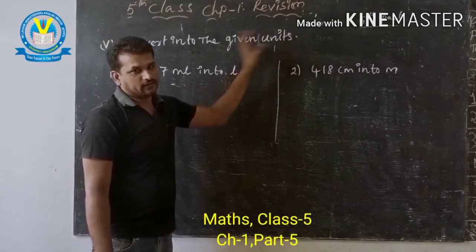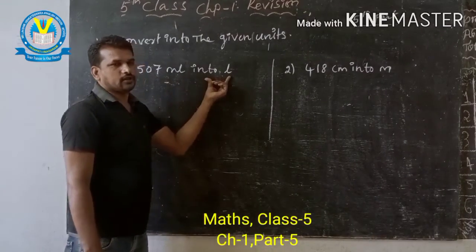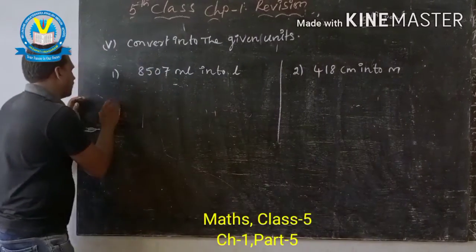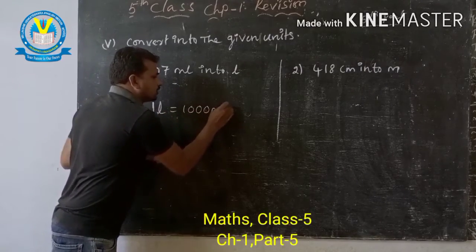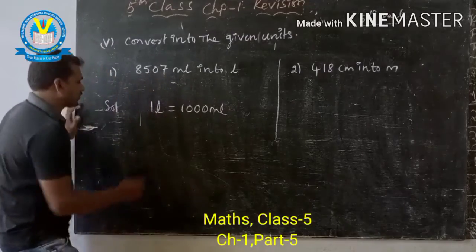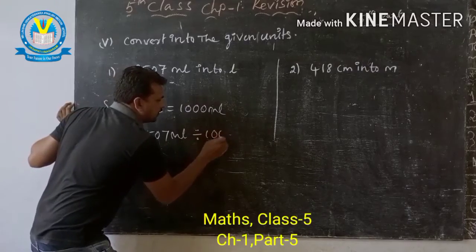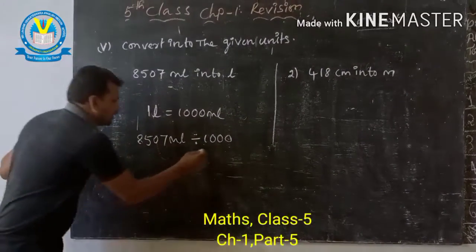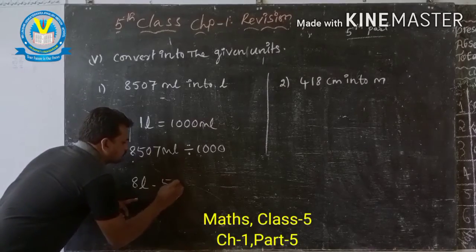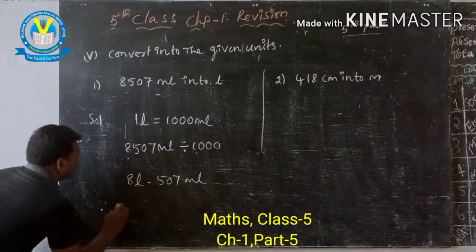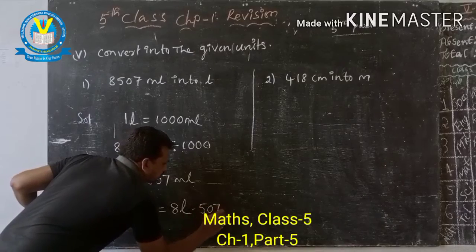Convert into the following units. Here 8,507 milliliters — milliliters converted into liters. We know that one liter equals 1,000 milliliters. So 8,507 milliliters divided by 1,000. That gives 8 liters and 507 milliliters. Therefore, 8,507 milliliters equals 8 liters and 507 milliliters.